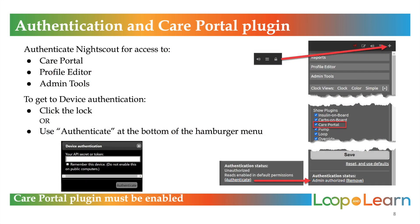When making changes on your site, you need to authenticate your device by entering your API secret in order for NightScout to have access to the Care Portal, profile editor, and admin tools. The API secret acts as a password and was created when you first set up your site. This security feature keeps unauthorized people from making changes. If the device authentication screen doesn't pop up, you can also get to it by clicking the lock once you hit the plus, or you can go to the bottom of the hamburger menu and authenticate there. You also must enable the Care Portal plugin to see the lock or plus symbols.